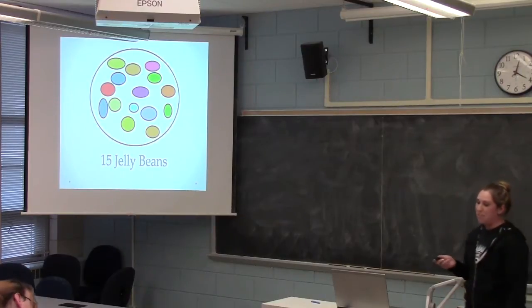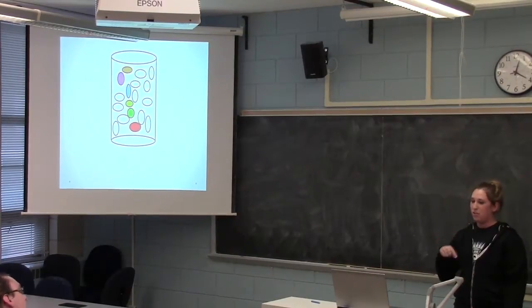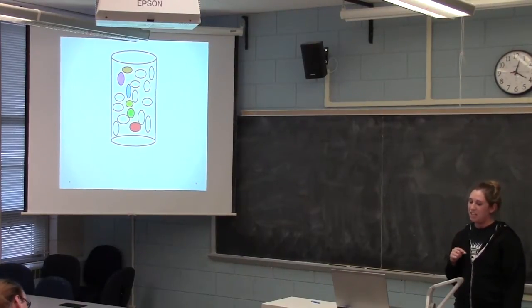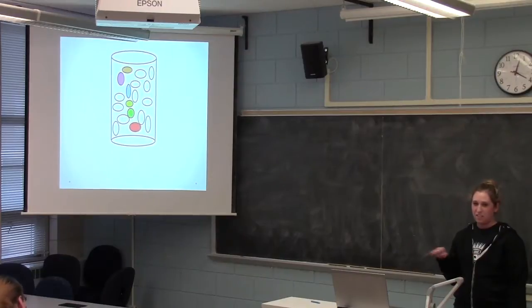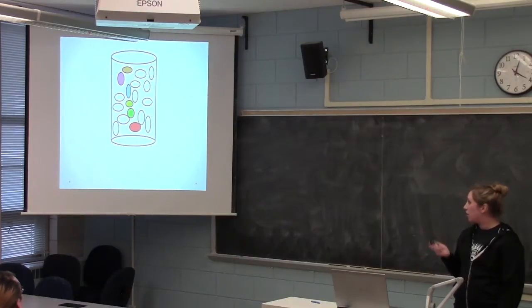And then next, what we can do is this would be the side of the jar. And if you count the total going up the side of the jar, you can see how many layers of jelly beans you have. And like I said, again, these would all be flat together. But if you count the colored ones going up the side, we get 6 jelly beans total.